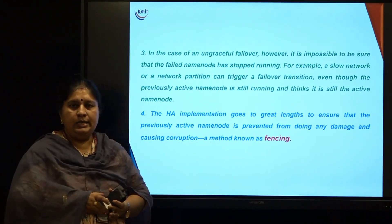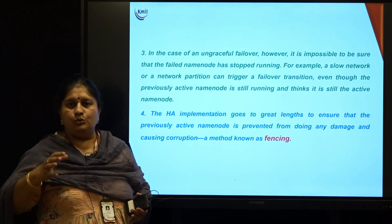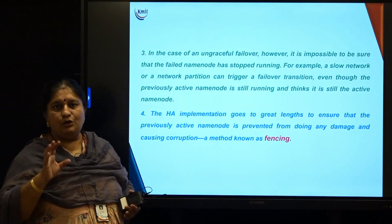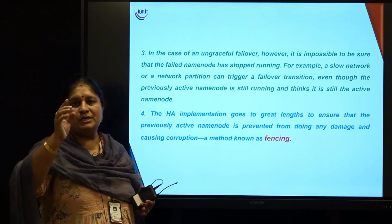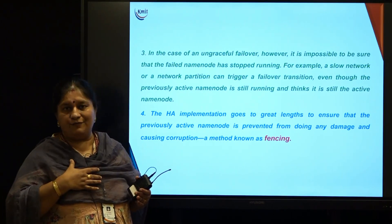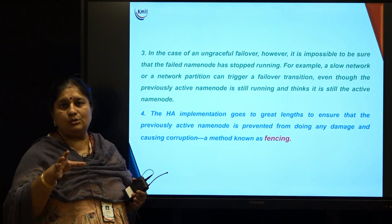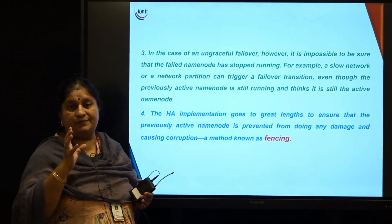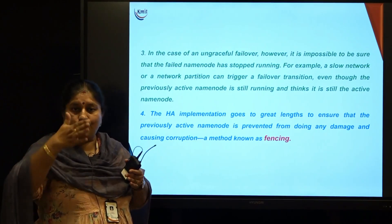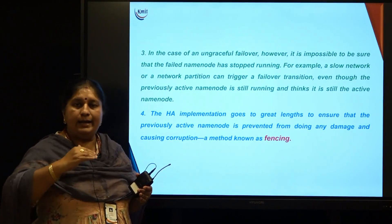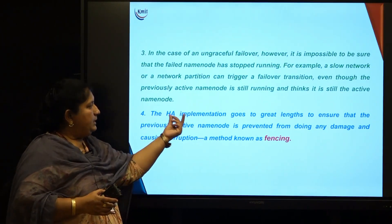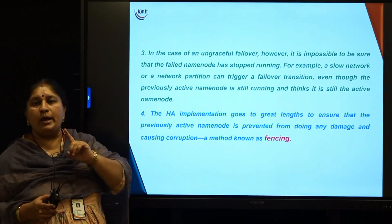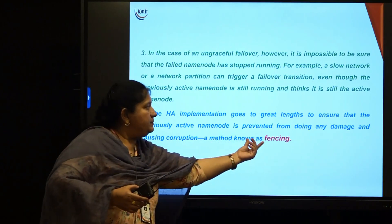Consider a scenario where the network on the name node side is slow. Though the name node is working, it may not send responses. In such a case, the failover controller thinks the name node has actually failed and gives control to the standby — but in reality the name node did not fail; the network was simply slow. This creates a situation where both name nodes could be in an active state. The failover controller must then forcibly stop the assumed-failed name node and let the other name node continue. The high availability implementation ensures that at any point in time only one name node is serving client requests. This method is called fencing.